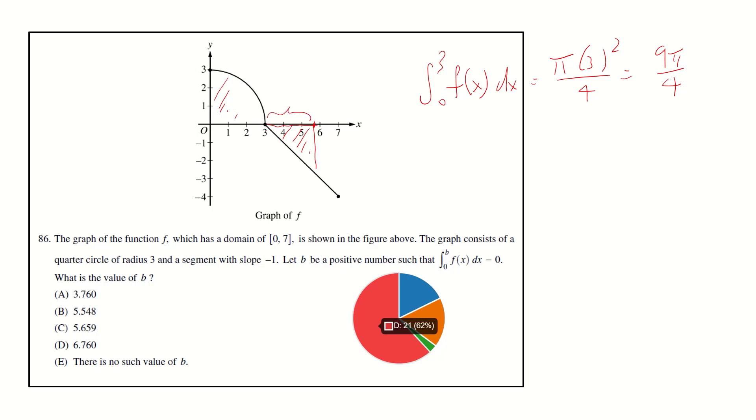This length is b minus 3. Because the slope is negative 1, the area of this triangle is half times b minus 3 squared, and it must equal 9 pi over 4 so the integral equals 0. Therefore b minus 3 squared equals 9 pi over 2. b equals 3 plus 3 square root pi over 2. Using your GC, this value is about 6.760. The answer is D.